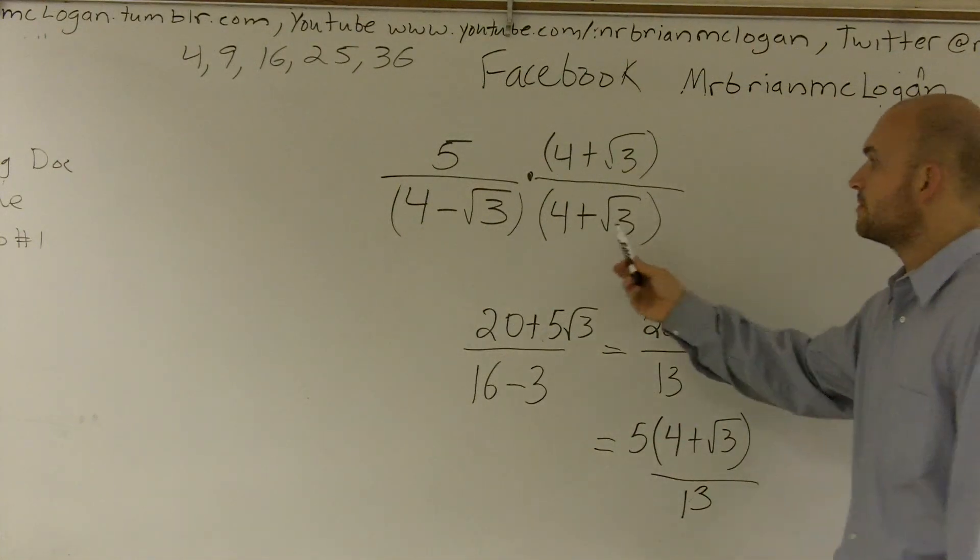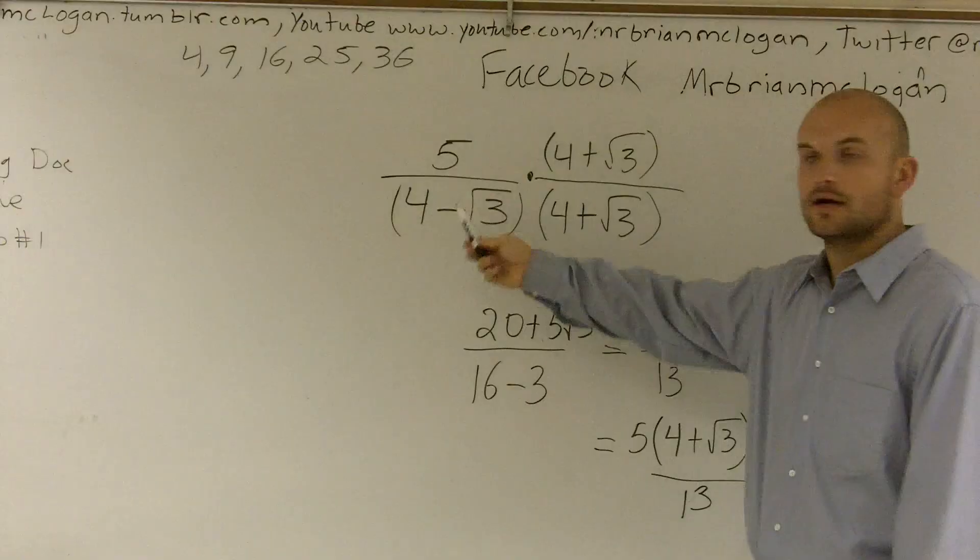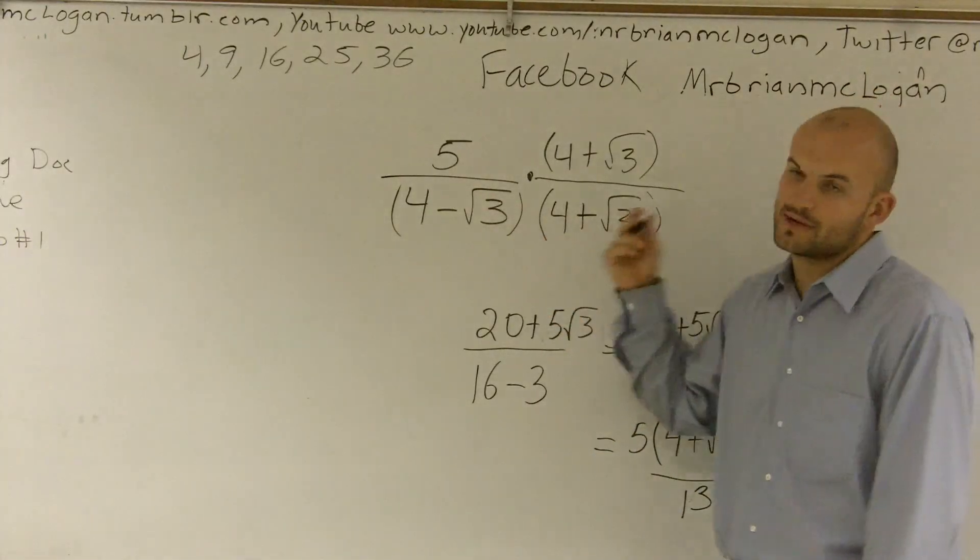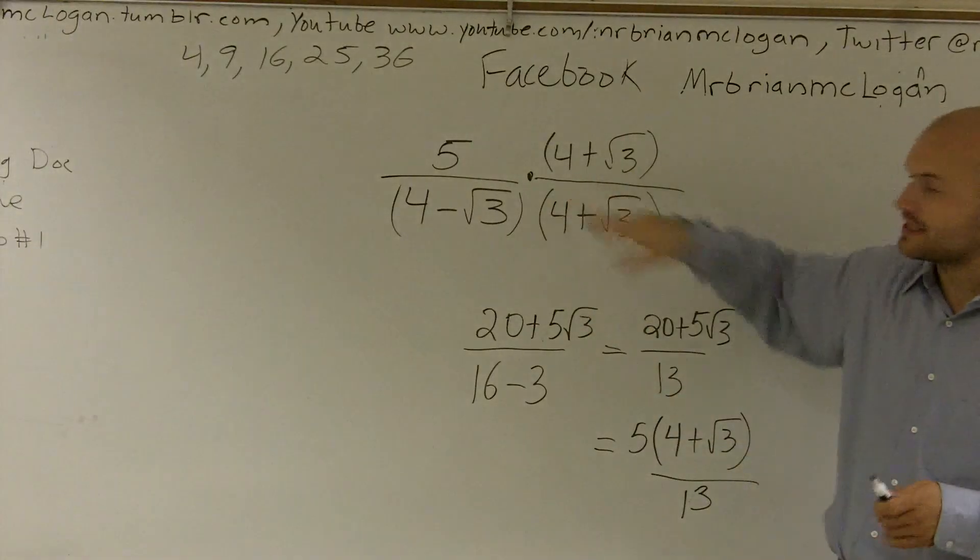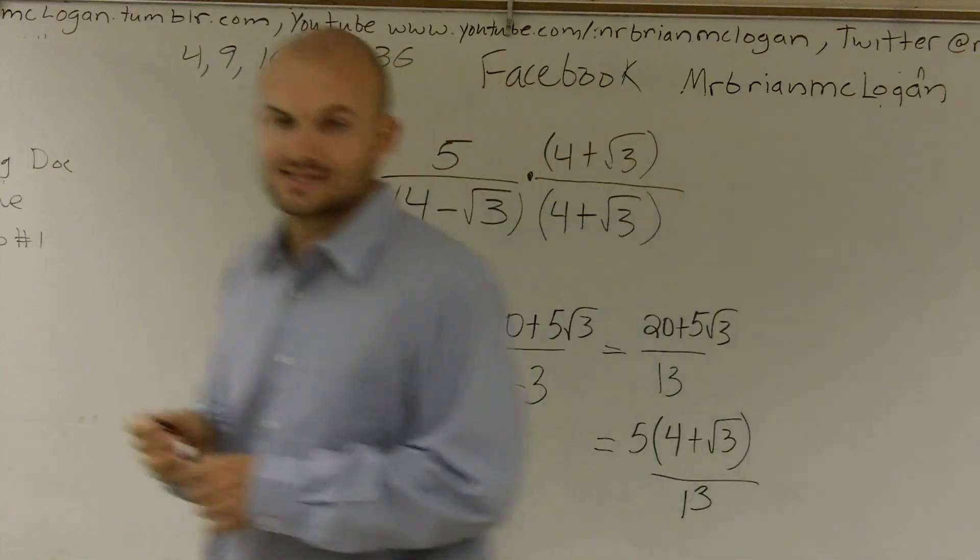But that's how you do it. This is what we call the conjugate of our binomial. So you always want to multiply by your conjugate when you try to get rid of your radical when it's a binomial.